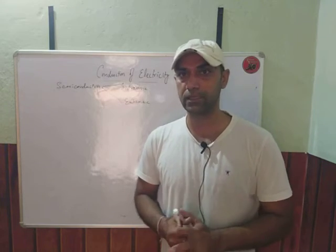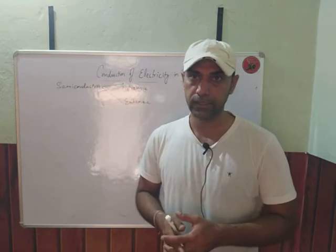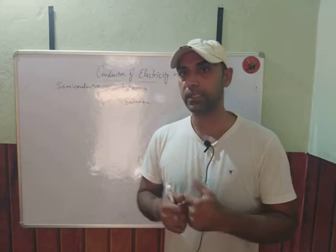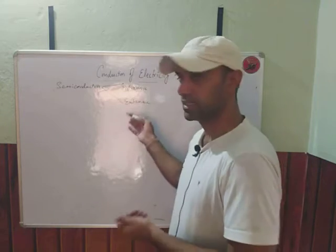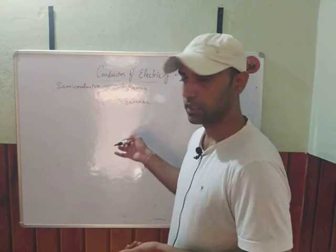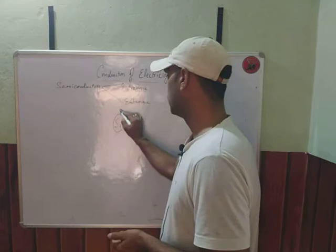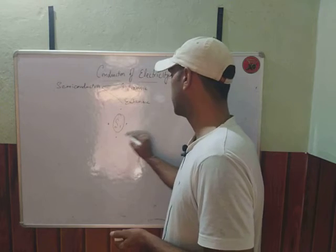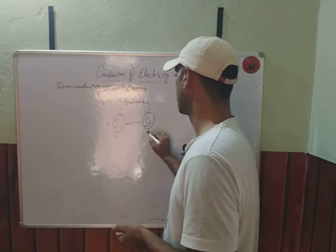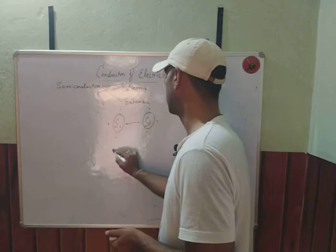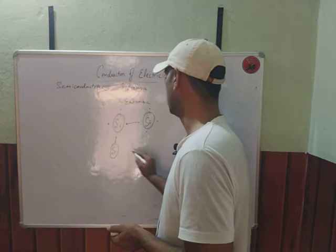When we are talking about conductivity, we will talk about electrons. Looking at the structure of silicon — we take the example of silicon — there are 4 electrons in its valence shell, and the neighboring silicon atoms are bonded to each other. You can see this bonding here.